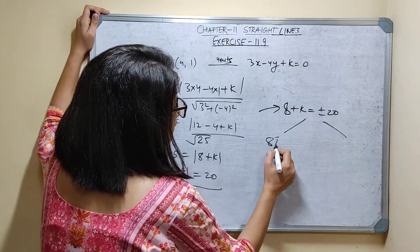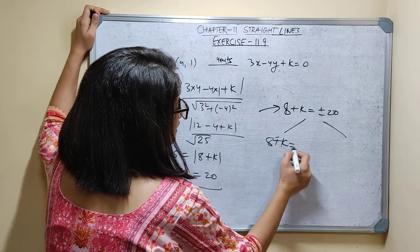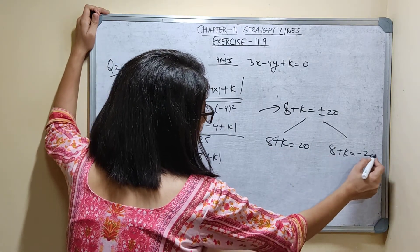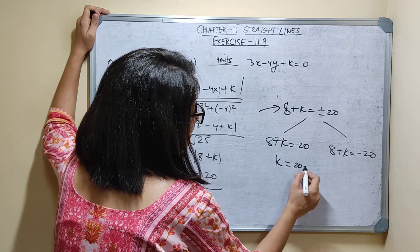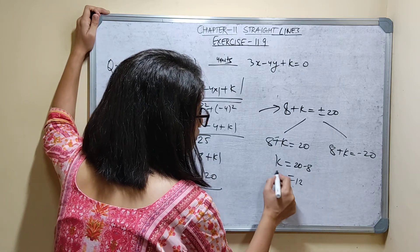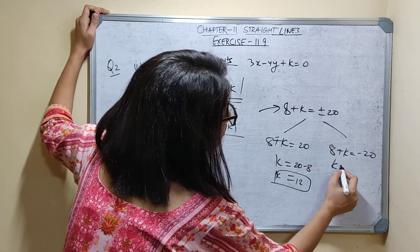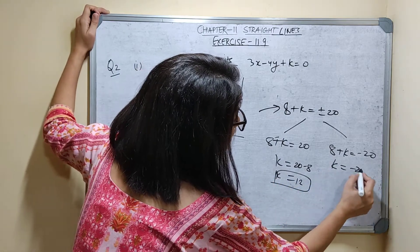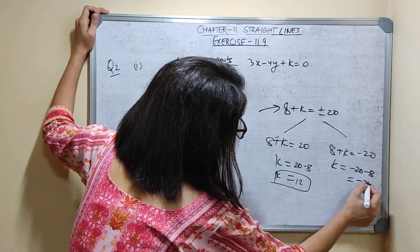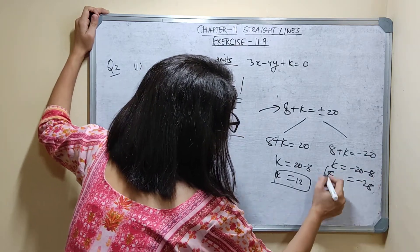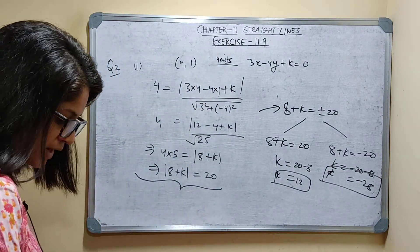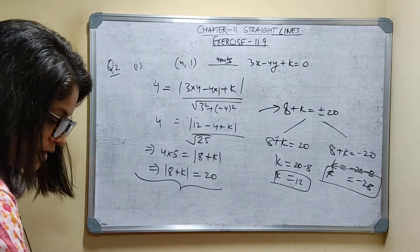Two cases: case 1 — 8 plus k equals 20, so k equals 20 minus 8, that is 12. Case 2 — 8 plus k equals minus 20, so k equals minus 20 minus 8. There are 2 values for k: one is 12, other is minus 20.